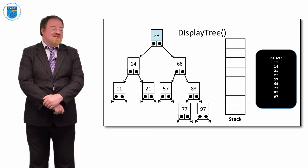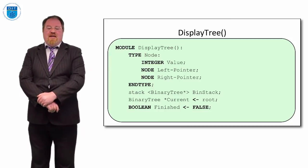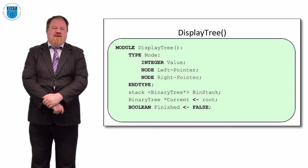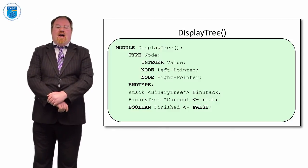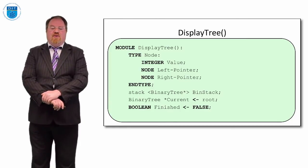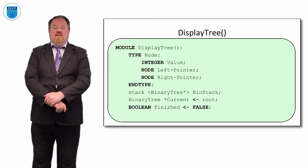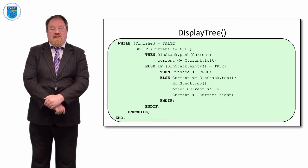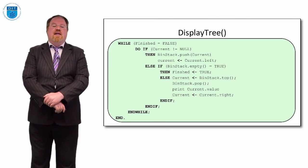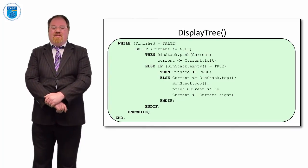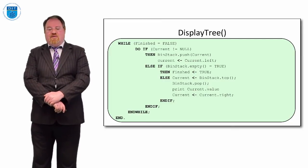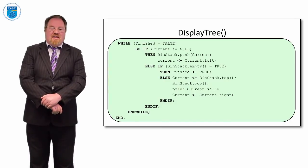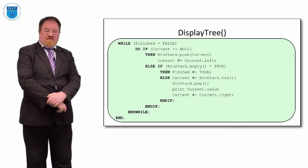Stacks are useful because they allow us to traverse tree structures in order. In the iterative pseudocode, the module 'display tree' creates a node type with left and right pointers, creates a stack called bin_stack, and sets current to the root. A boolean 'finished' is set to false. The while loop runs while not finished: if the current value is null, pop and print from the stack; otherwise keep going left, pushing values, until we reach the bottom, then start going right.